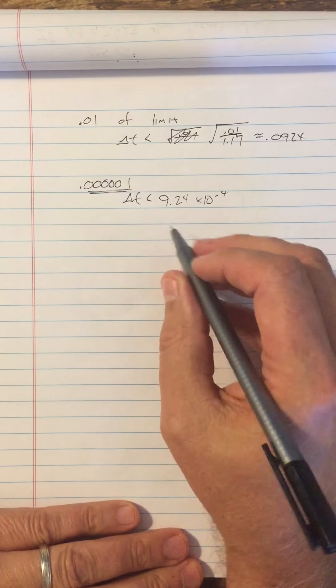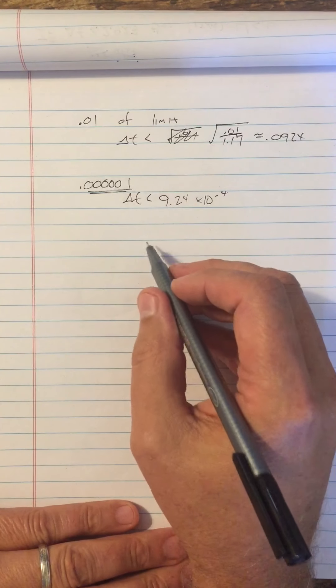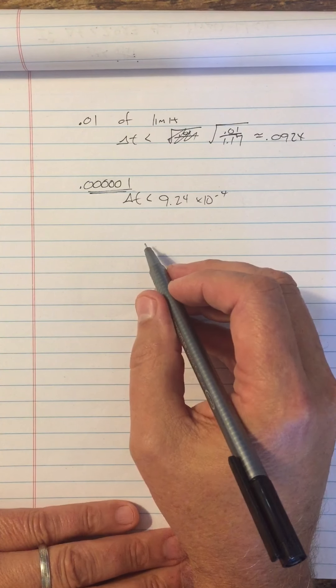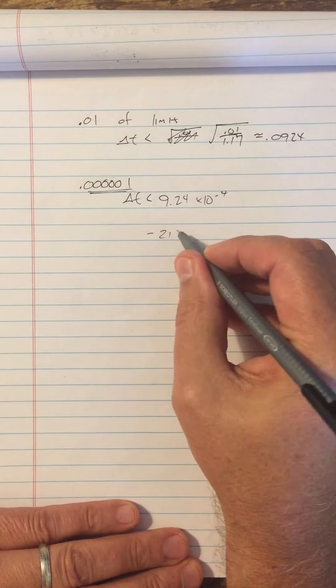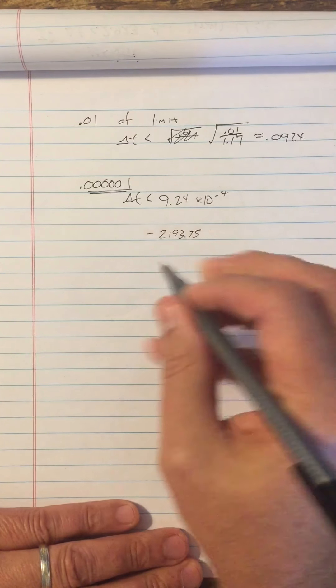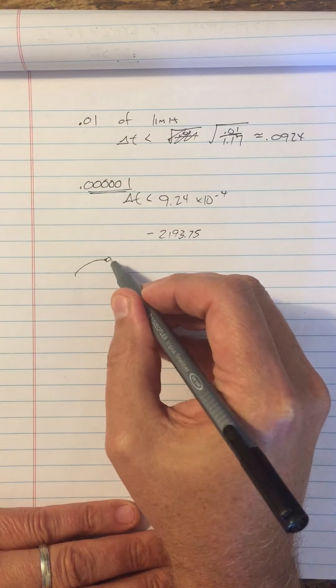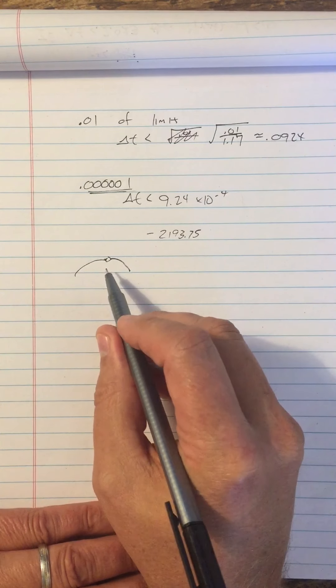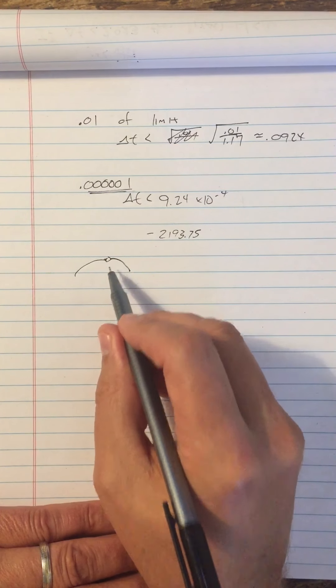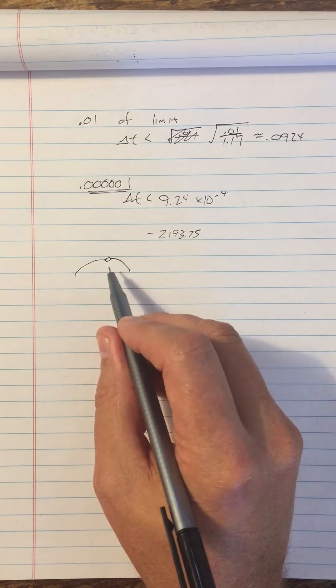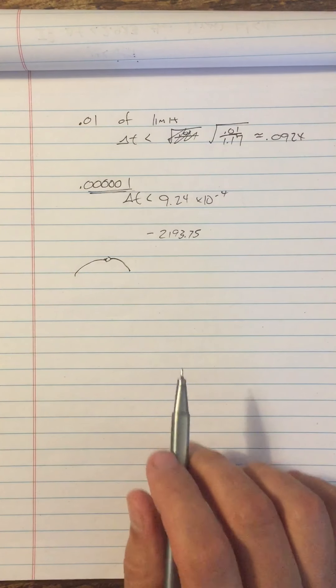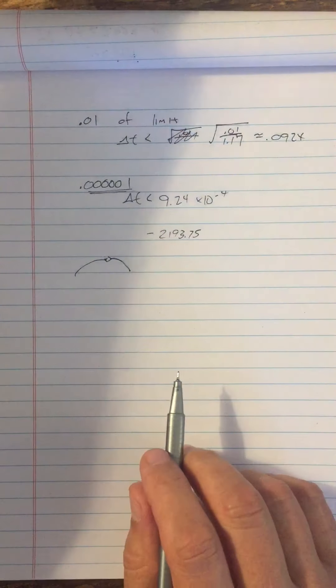In fact, the only thing that is blocking me from getting to the exact value of the limit of negative 2193.75, the only thing that's blocking me is a hole in the graph, a hole in the graph whose radius is zero. So is it really there? It is. It is definitely there and it is causing all this heartache.